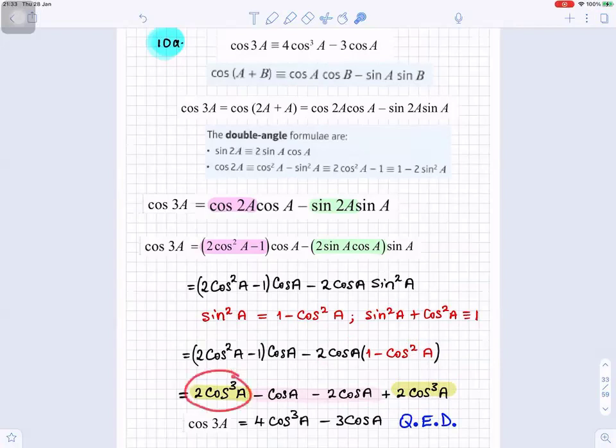Now, we add 2 cos³a plus 2 cos³a, it gives you 4. 2 plus 2 gives you 4 cos³a. Minus cosa minus 2 cosa is like minus 1 minus 2, which is minus 3 cosa. Quod erat demonstrandum. As required to show.